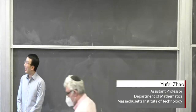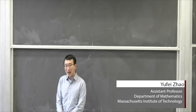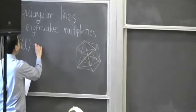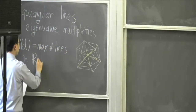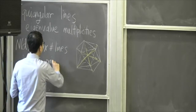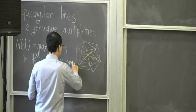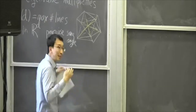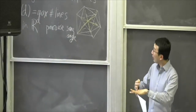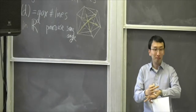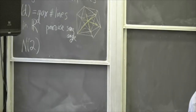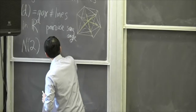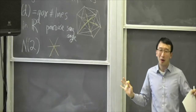Thank you for the invitation, wonderful to be here today. I'm going to tell you about equiangular lines and eigenvalue multiplicities. The main objects we wish to study are equiangular lines — specifically configurations of lines in R^d, all passing through the origin, that pairwise make the same angle. Equiangular means equal angles. How many lines can you put in R^d, all going to the origin, so that they all pairwise make the same angle? For example in two dimensions, you can draw three lines pairwise at 60 degrees, but you can't make four lines all at equal angles with each other.